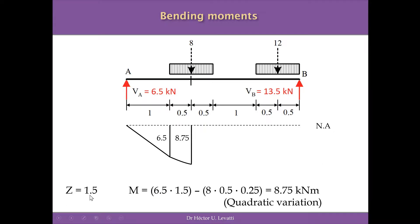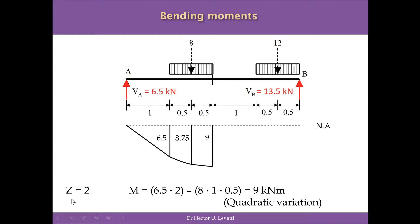At z = 1.5 m (middle of the first UDL), the moment is 6.5 × 1.5 minus 8 × 0.5 × 0.25 = 8.75 kN·m, with a quadratic distribution under the UDL. At z = 2 m, the moment is 6.5 × 2 minus 8 × 1 × 0.5 = 9 kN·m, again with a quadratic distribution in this interval.